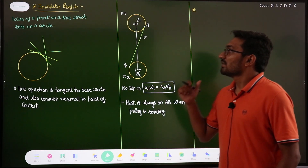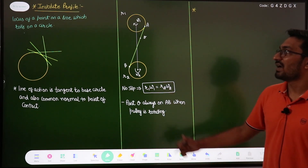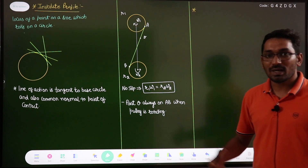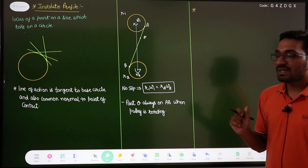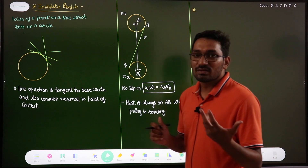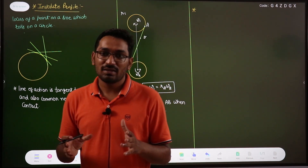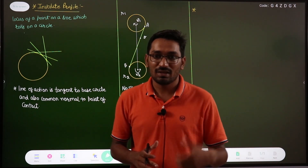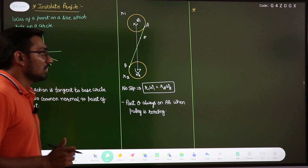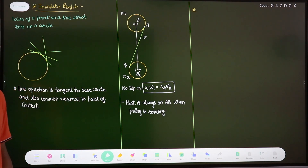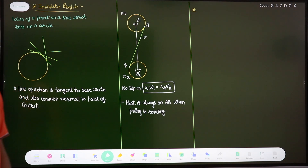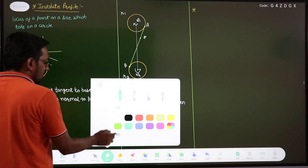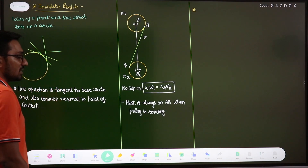Let us discuss the first conjugate profile, that is the involute profile. A conjugate profile is one which satisfies the law of gearing at each and every point of contact. The conjugate profile is of two types: one is the involute and the other is the cycloidal profile. The involute profile is the most important profile to discuss.